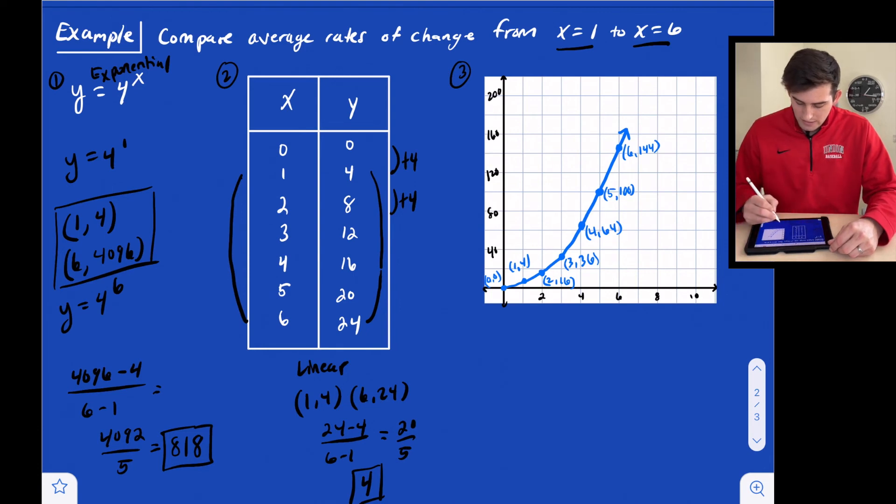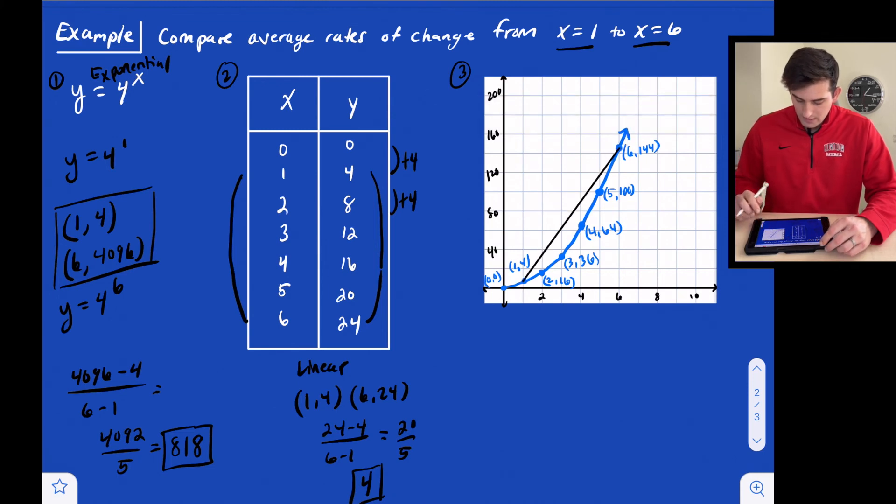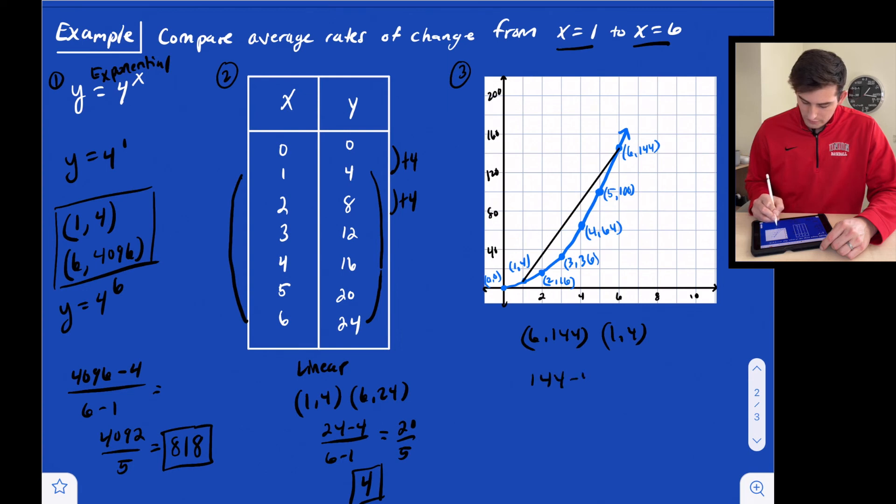Now lastly, we can add a line here. We want to go from when x is 1 to when x is 6. Those are our two points. So let's do 6 comma 144 and 1 comma 4. Now we can do 144 minus 4 and 6 minus 1. So 140 over 5, we divide that and we get 28. We can see that for number three, we had quadratic.